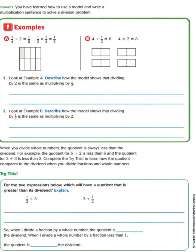In example 2: 4 divided by 1/2 equals 8. We know that 4 times 2 equals 8 because we have 4 rectangles, and each rectangle has been divided in half. If we count how many halves we have, it's 1, 2, 3, 4, 5, 6, 7, 8, and that is our answer.